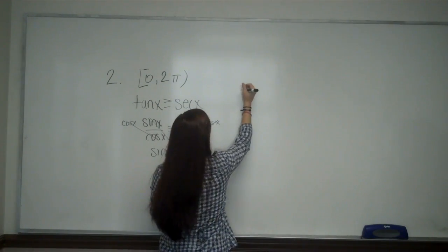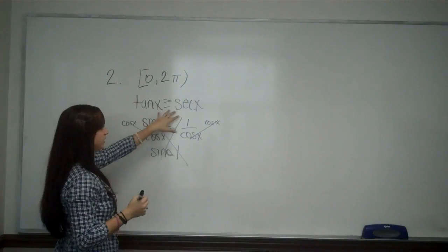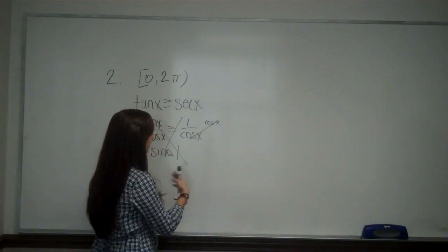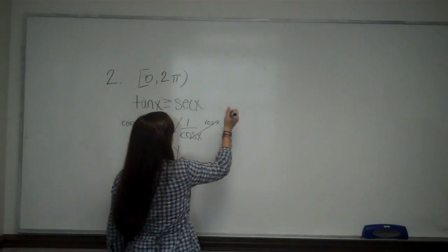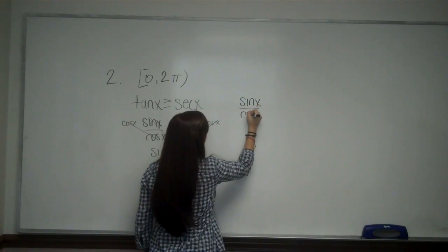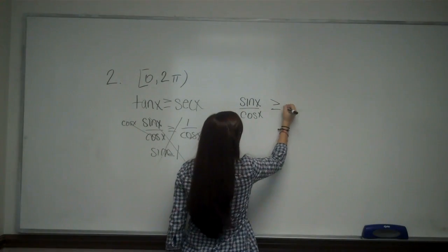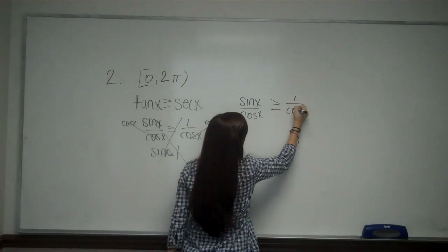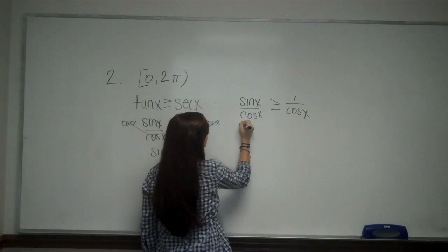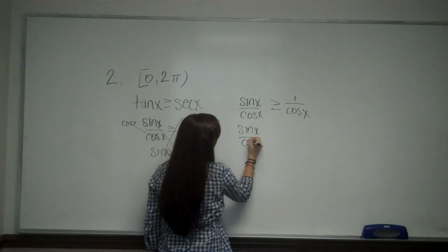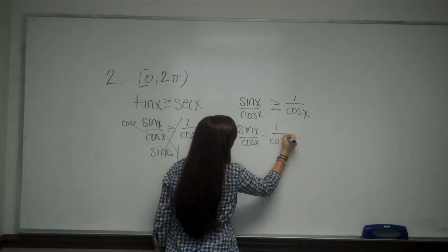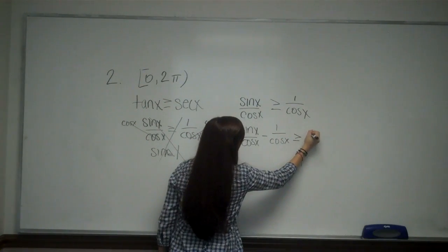Instead I'm going to do tangent x. We want to change these into sines and cosines because we know values for sines and cosines easier than tangent and secants. So tangent is going to be sine x over cosine x, and secant x is going to be one over cosine x. I'm going to subtract the secant side over, so I have sine x over cosine x minus one over cosine x is greater than or equal to zero.